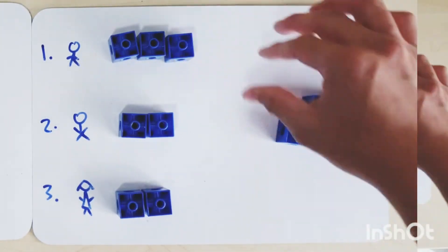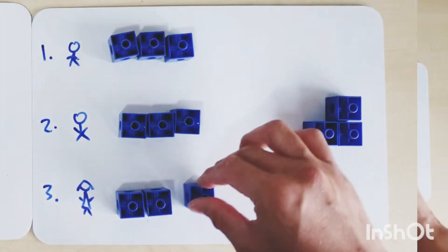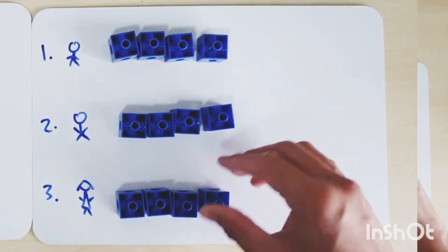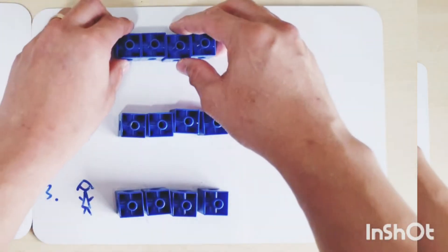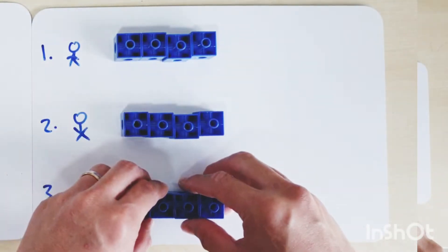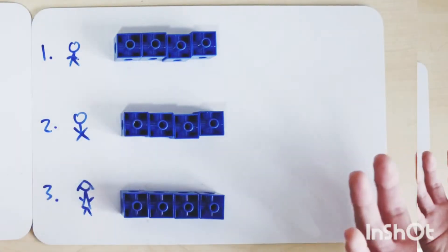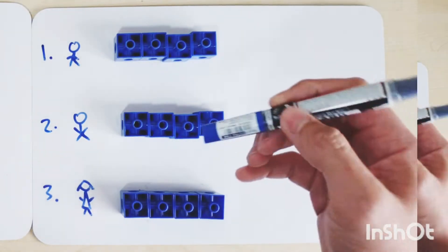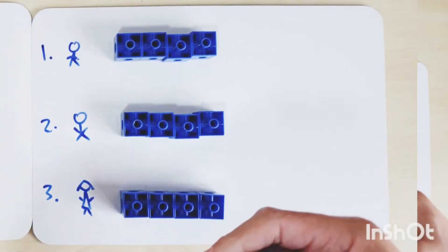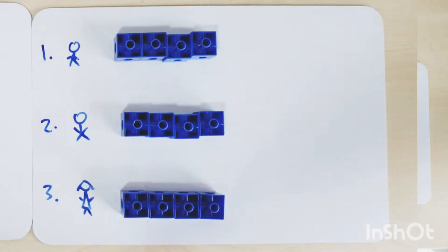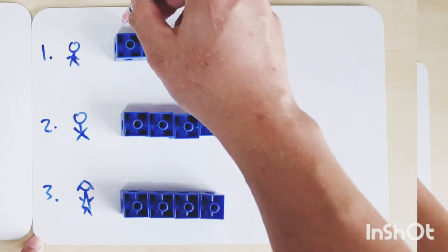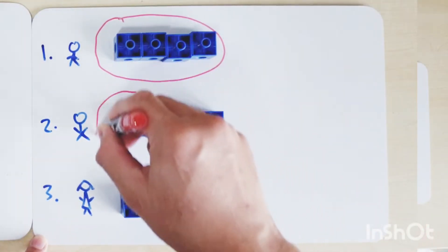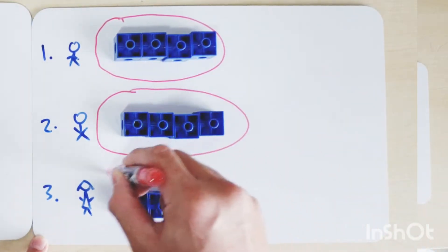We continue giving one to each friend at a time until all 12 toys are distributed. Now I have divided them equally by three. We can see a pattern - they are now grouped into three groups. I'm going to circle them: one group, two groups, three groups.